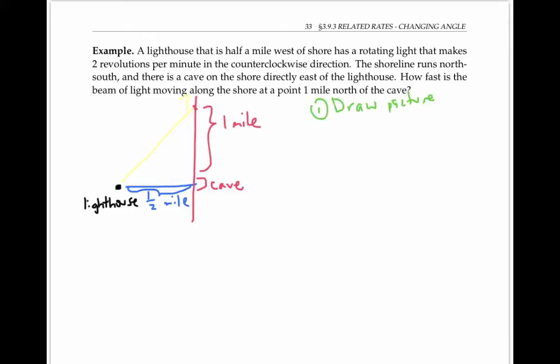We've drawn a picture. Now let's label it with variables for all the quantities that are changing with time. The distance between the lighthouse and the cave is fixed, so we don't have to put a variable for that. But the distance between the cave and the point on the shore where the light is hitting is varying, so I'll call that x.